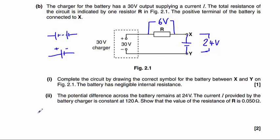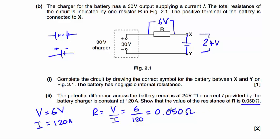So the voltage across the resistor is 6 volts. The current through it is 120 amps. Therefore, the resistance is going to be V divided by I. So that's 6 divided by 120, which gives us 0.050 ohms, exactly as the question asked us to prove.